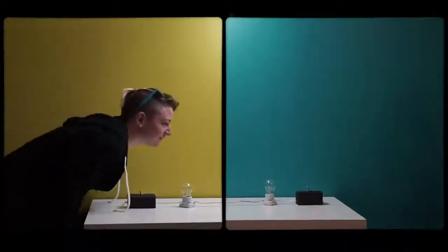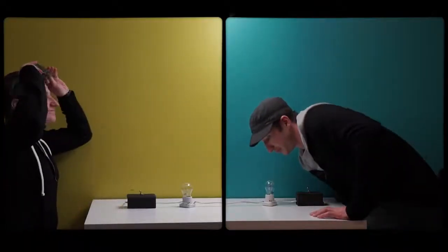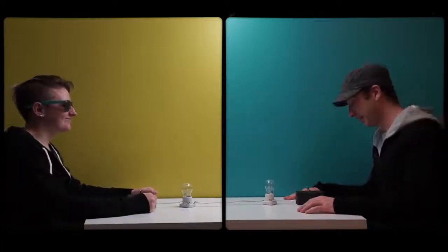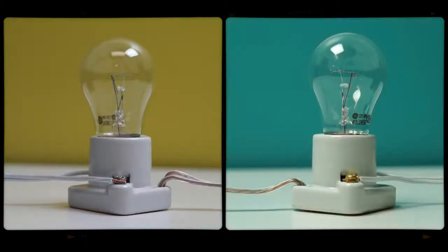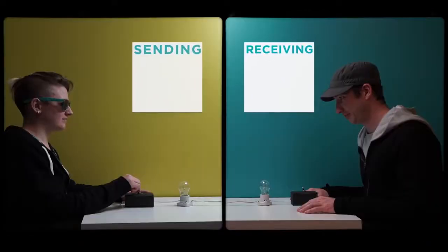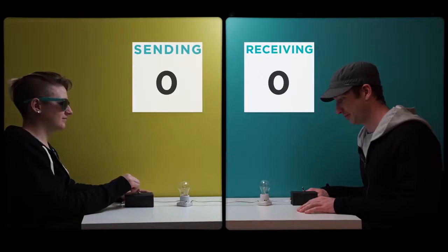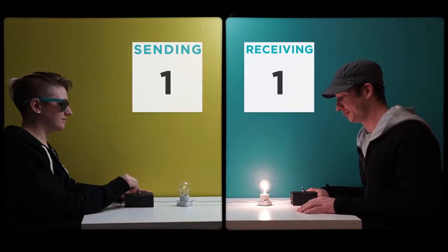To send a bit via electricity, imagine that you have two light bulbs connected by a copper wire. If one device operator turns on the electricity, then the light bulb lights up. No electricity, no light. If the operators on both ends agree that light on means one, and light off means zero, then we have a system for sending bits of information from one person to another using electricity.